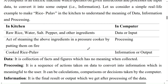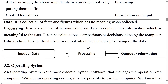This way you can compare data, processing, and information. Data is a collection of facts and figures which have no meaning when collected. Processing means it is a sequence of actions taken on data to convert it into information which is meaningful to the user.